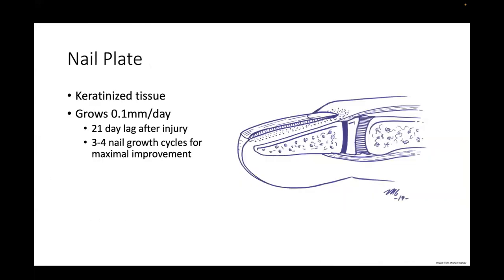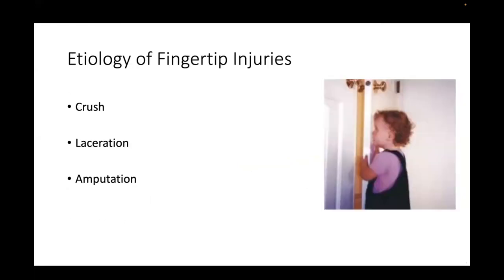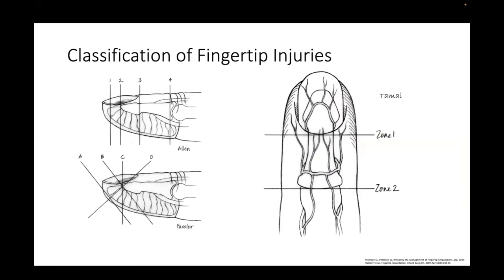The nail plate is made up of keratinized tissue. It grows a tenth of a millimeter a day, and there's usually a 21-day lag after injury. Three to four nail growth cycles are essential to maximal improvement in appearance. Fingertip injuries in pediatric patients generally come from crush injuries, lacerations, or amputations. Several classification schemes have been described — the Allen classification is based on level of amputation, the Fassler system on geometry of pulp loss and bone exposure, and both have limitations in guiding treatment.